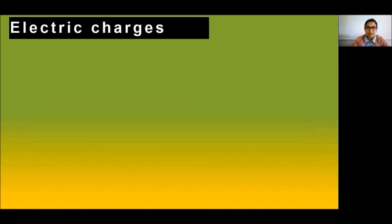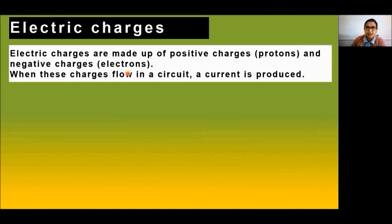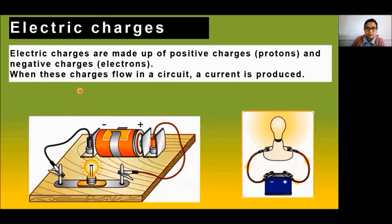What are electric charges? There are two types of charges: positive charges called protons and negative charges called electrons. When these charges flow through the circuit, current is produced. Electric charges are measured in coulombs.